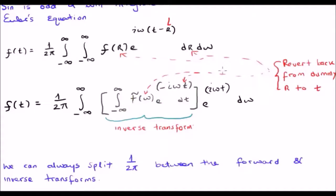Now, in regard to this 1 over 2 pi, we are always able to split that up between the forward and inverse transforms. Why? Well, because they came from the same equation in the first place.